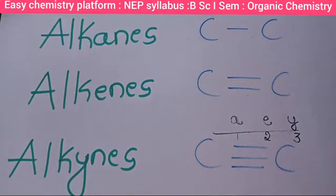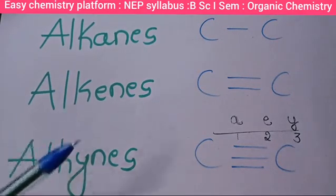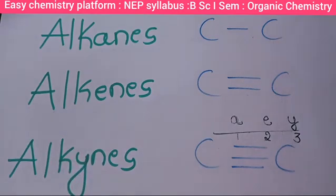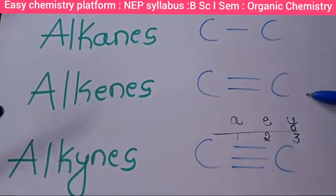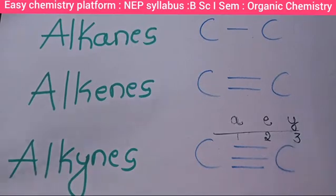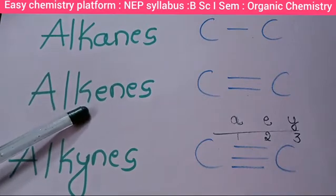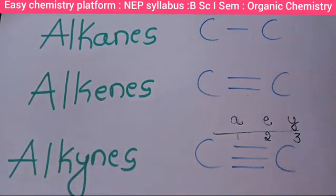Organic compounds can be divided into three main categories. The first one is alkanes, the second one is alkenes, and the third one is alkynes. Alkanes contain carbon-carbon single bonds, alkenes contain carbon-carbon double bonds, and alkynes contain carbon-carbon triple bonds. These are all hydrocarbons.